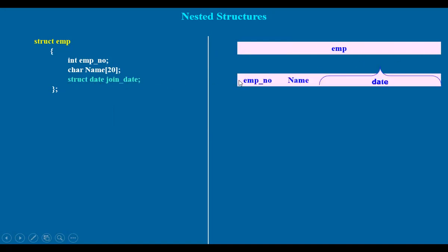In this EMP structure, the fields are employee number, name, and date. Date is itself a structure with three fields: day, month, and year. So inside the main structure, we have three fields to define the inner structure.